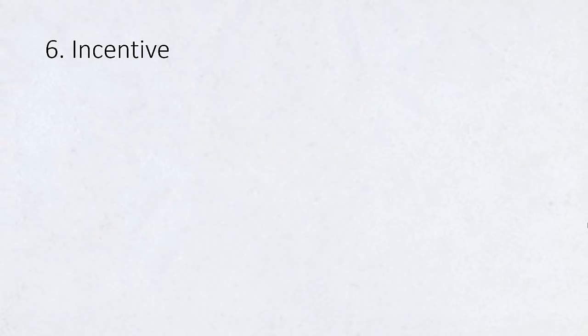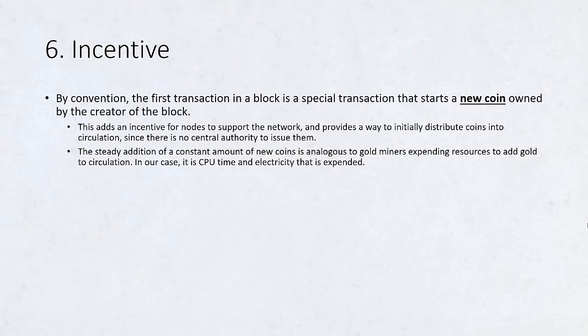Incentive. By convention, the first transaction in a block is a special transaction that starts a new coin owned by the creator of the block. This adds an incentive for nodes to support the network and provides a way to initially distribute coins into circulation, since there is no central authority to issue them. The steady addition of a constant amount of new coins is analogous to gold miners expending resources to add gold to circulation.